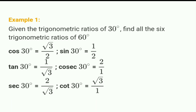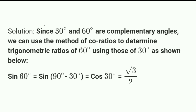Example: Given the trigonometric ratios of 30 degrees, find all six trigonometric ratios of 60 degrees. The given values are: cos 30 = √3/2, sin 30 = 1/2, tan 30 = 1/√3, sec 30 = 2/√3, cosec 30 = 2, cot 30 = √3. Since 30 and 60 are complementary angles (30 + 60 = 90), we use co-ratio relationships to find the 60-degree values.